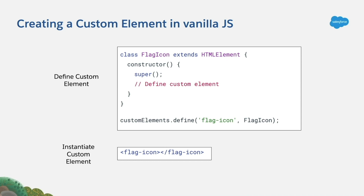In this example, we want to create a flag icon custom element, and in the constructor, we will be able to define things like the element attributes, or methods that define the behavior of the custom element. Then we will have to call the window custom elements dot define function. You will need to pass in a name for the custom element, and also match it with the class that defines its behavior.